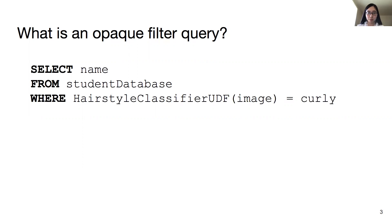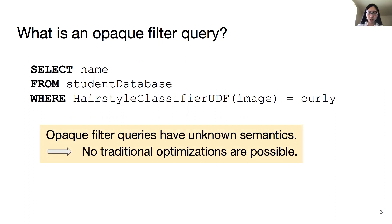In contrast to simple filter queries, its semantics are unknown to the optimizer, so no traditional optimization can be directly applied to it. Due to its powerful expression ability, the opaque filter query is important for unstructured data in machine learning and data science workloads.